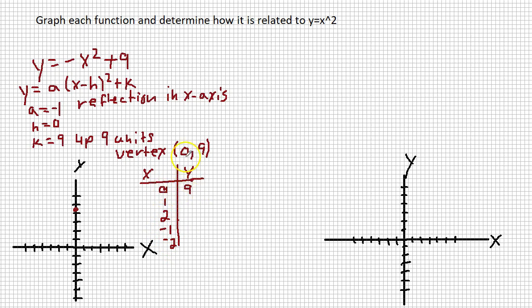If I plugged in 1, negative 1 squared is 1, but this means, with this negative out front, since a is negative 1, a is multiplied times this. So negative 1 times 1 makes negative 1. Negative 1 plus 9 makes 8. So I have the point 1, 8. So if I move right 1 unit, I go up 8, which puts me right here.